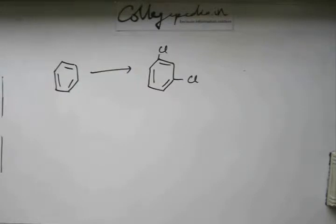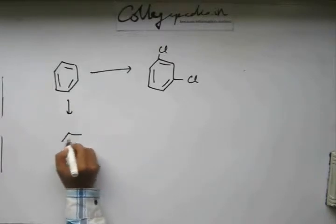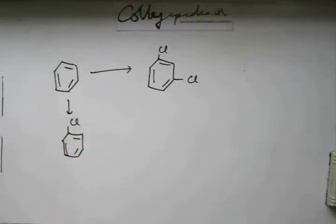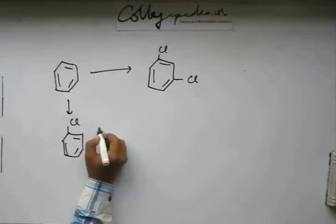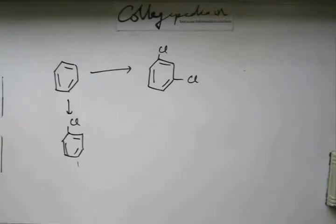Halogens are electron withdrawing but still ortho-para directing - we discussed this when we studied the directing effect. So if you go for halogenation straight away, 2 times halogenation, that won't be a good idea. Because after the first halogenation you get chlorobenzene, and the next chlorine will come at ortho or para, not at meta. But I want it at meta.